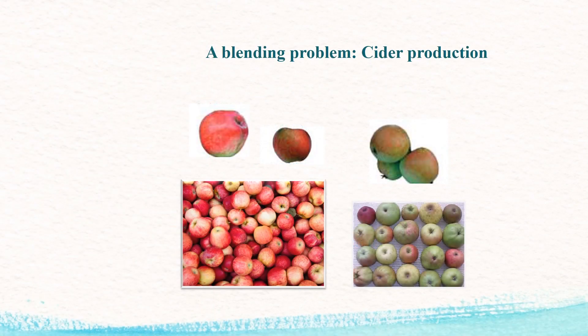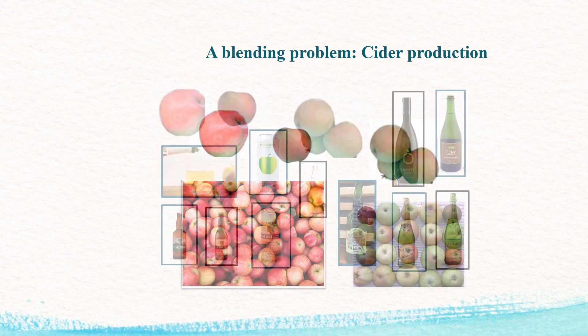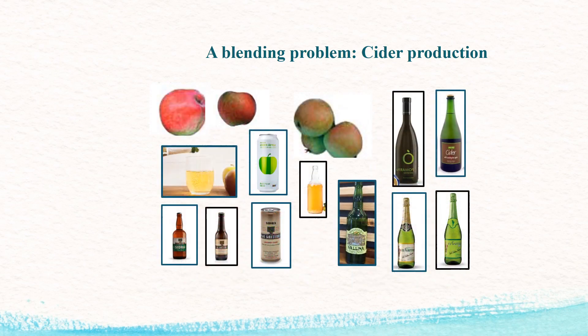Many blending problems can be solved by building linear programming models. Cider production is an example. The apple varieties used to make cider can be classified as sweet, sour, and bitter. From a blend of apple varieties, the company makes several products, such as natural cider and also extra and black label, among others.